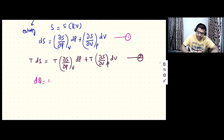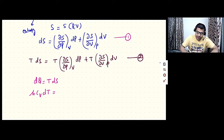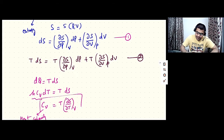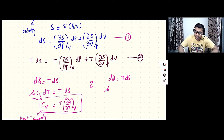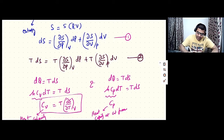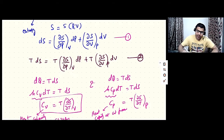From the second law of thermodynamics, dQ = TdS. Also, dQ = μCV dT, where CV is the specific heat at constant volume and μ is the number of moles. Writing μCV as the heat capacity CV, we get CV = T(∂S/∂T)_V — call this equation three. Similarly, dQ = μCP dT = TdS, where CP is the specific heat at constant pressure. Writing μCP as heat capacity CP gives CP = T(∂S/∂T)_P — call this equation four.